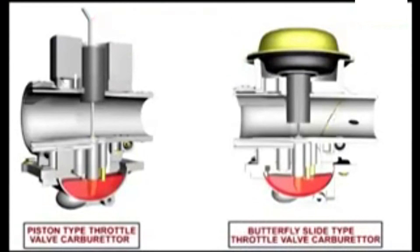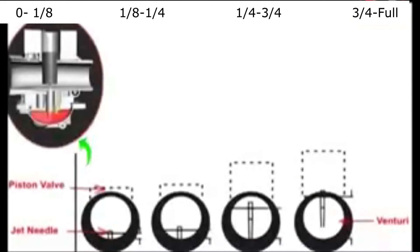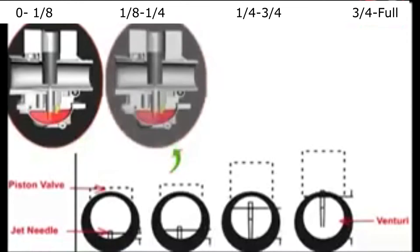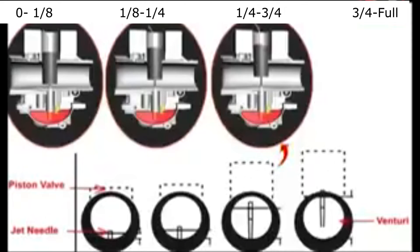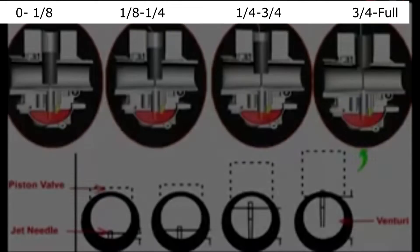In the last video, we looked at the two major types of carburetors and their differences. In this video, we're going to look at the throttle openings and what adjustments are in play at each one of those openings.